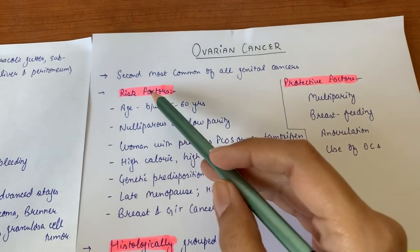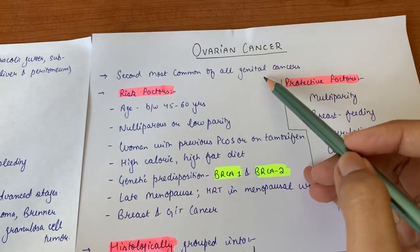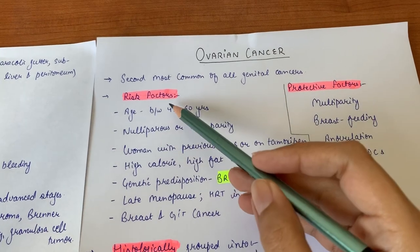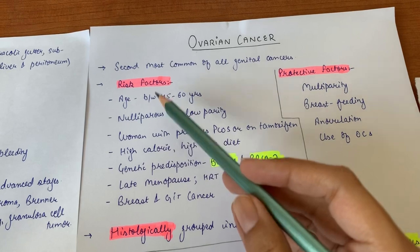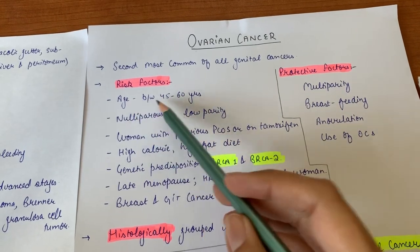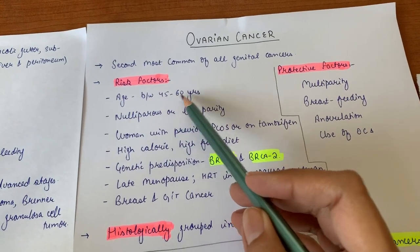Ovarian cancer is the second most common of all genital cancers. We have some risk factors and protective factors regarding this cancer. The risk factors here are age - women between 45 to 60 years are at increased risk.